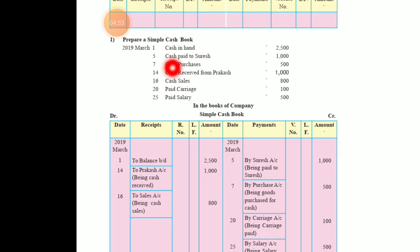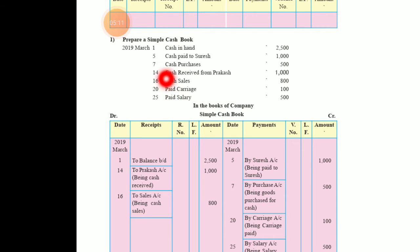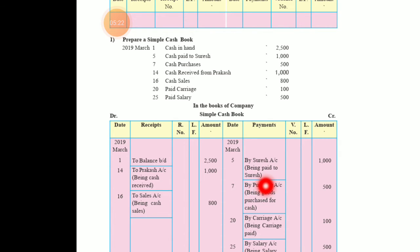Next, March 5 — cash paid to Suresh 1000. When you make a payment, your cash is going out of the business. So it will be recorded on the payment (credit) side. On March 5, we write 'By Suresh account — 1000'. The narration is: 'Being payment paid to Suresh' or 'Payment done to Suresh'.